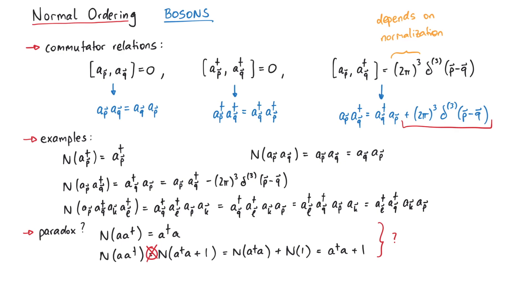We mentioned this at the beginning of the video. Pretend that all anti-commutators are zero. So the normal order of a-a-dagger is the same as the normal order of a-dagger a. Or equivalently, the normal order of their commutator is zero.